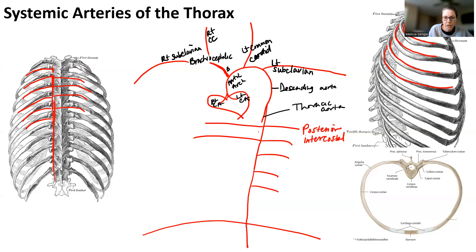The thoracic aorta is also going to have individual branches that are going to be esophageal and bronchial. Esophageal and bronchial supply, that's right, to the esophagus and the bronchi or to the lungs.